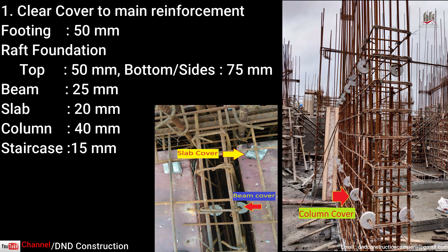The first point is clear cover to reinforcement bars, for environmental protection and to prevent corrosion. Standard covers are as follows: for raft foundation, bottom cover is 75 mm and top cover is 50 mm; for beam, 25 mm; for slab, 20 mm; for column, 40 mm; and for staircase, 15 mm.